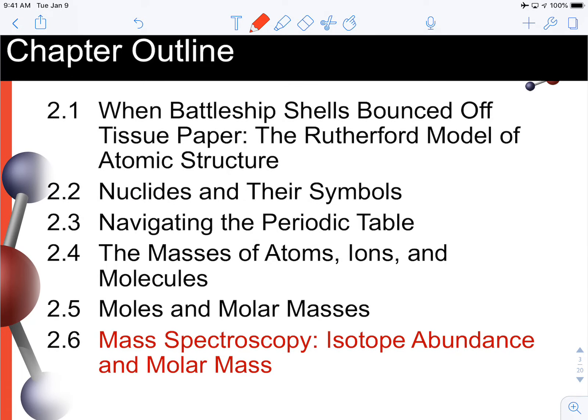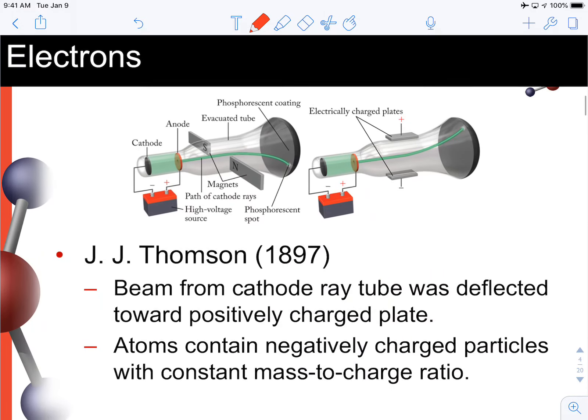Here's your chapter outline, and you'll notice basically we've got five main sections that we're covering. The last section, mass spectroscopy, isotope abundance, and molar mass—don't worry about that. Read it for your knowledge, for your interest, but that's not something I'm going to cover in class and you're not going to be responsible for it on any exam material.